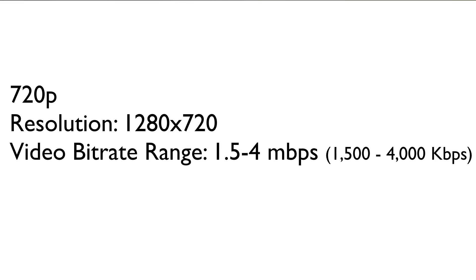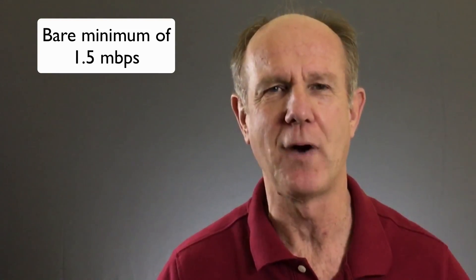If you're shooting in 720p, the resolution is 1280 by 720 and the video bit rate range should be 1.5 to 4 megabits per second, or 1500 to 4000 kilobytes per second. Most live streams are pushed out at 720p, so you need a bare minimum of at least 1.5 megabits per second. Live videos require a consistent internet connection and a consistent bit rate and quality. Your internet speed should match those requirements.